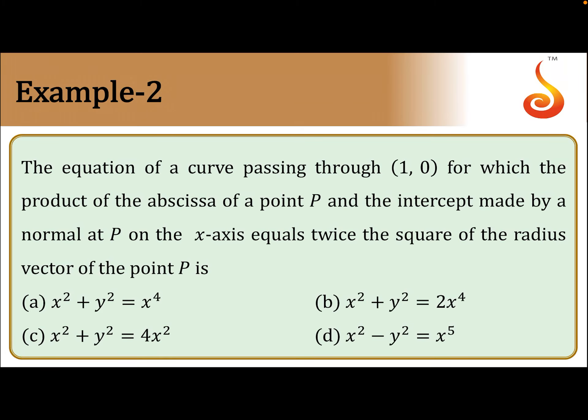A curve passes through (1, 0) for which the product of the abscissa of a point P and the intercept made by the normal at P on the x-axis equals twice the square of the radius vector of the point. So what this means is: this is the curve, this is the tangent, and this is the normal.